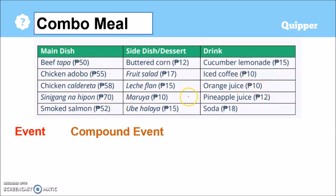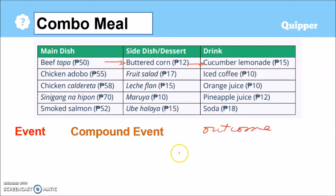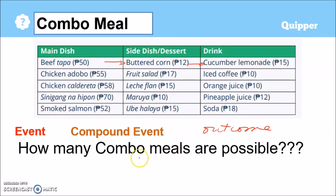And one result or one combo meal for this instance — choosing beef tapa, then buttered corn, then cucumber lemonade — is what we call an outcome. So how many outcomes are possible?